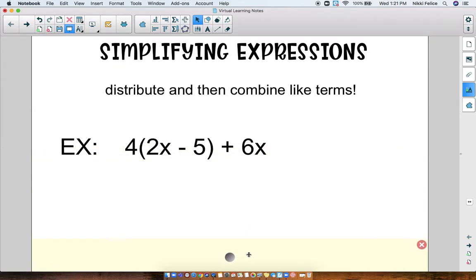Okay, so first we have 4 times 2x minus 5 plus 6x. First we want to distribute. The number that's getting distributed here is 4 because it's the number right outside the parentheses.